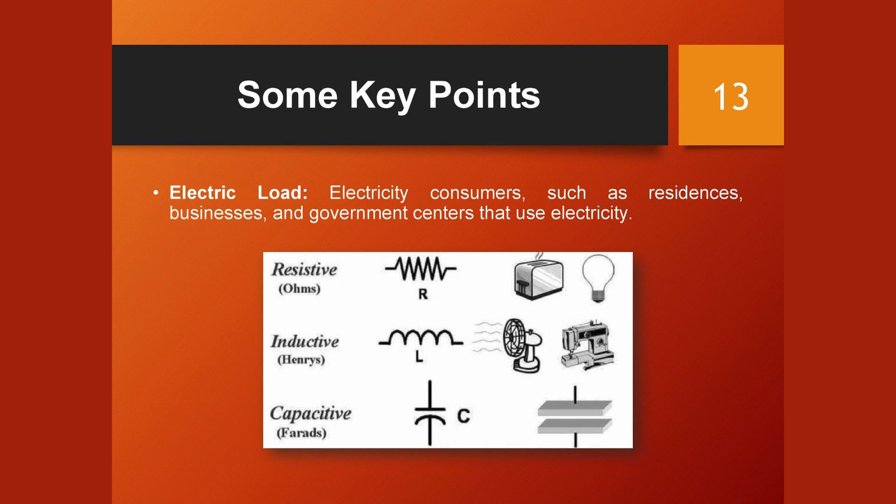Inductive loads require a magnetic field to operate. All electrical loads that have a coil of wire to produce the magnetic field are called inductive loads. A capacitor is a device made of two metal conductors separated by an insulator called a dielectric — including air, paper, glass, and other non-conductive materials.